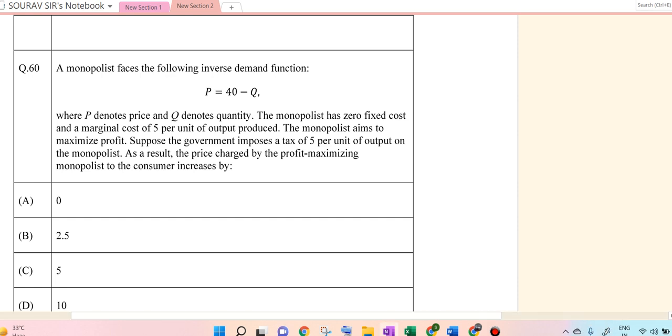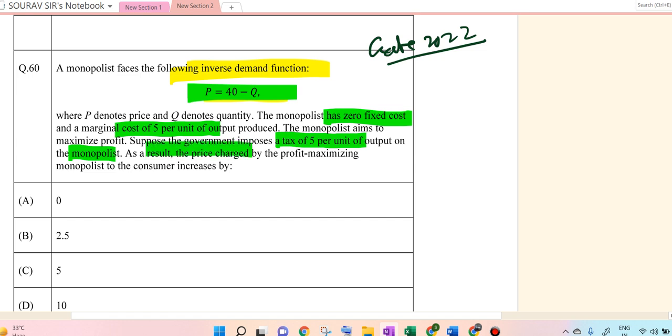Hello students, in this video I will be solving a 2022 solution of economics. The monopolist faces the following inverse demand function: P equals 40 minus Q, where P denotes the price and Q the quantity. The monopolist has zero fixed cost and marginal cost of 5 units per output. The monopolist aims to maximize profit. Suppose that the government imposes a tax of 5 units per unit on the monopolist. As a result, the price charged by the profit-maximizing monopolist increases by what amount.